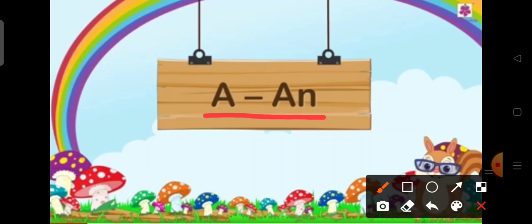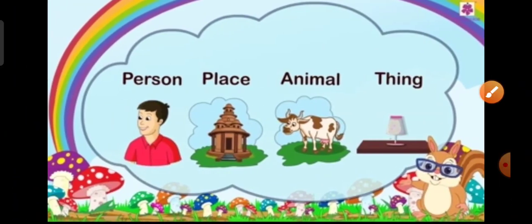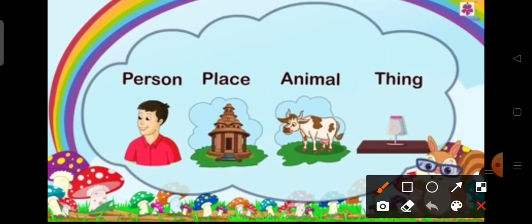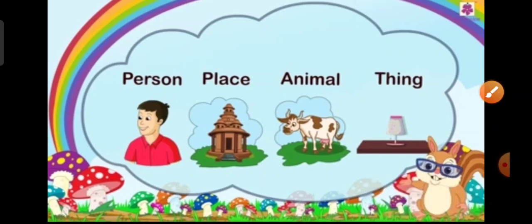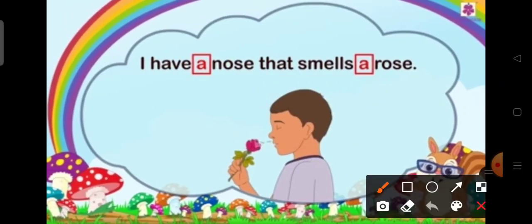We use a or an before a naming word that shows one person, place, animal or a thing. Such as, I have a nose that smells a rose. Here we are using a before nose and rose, which are naming words.